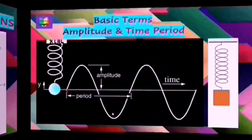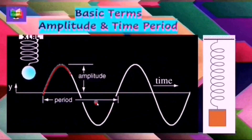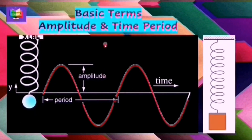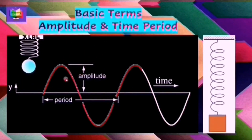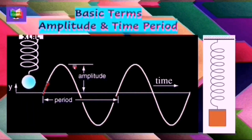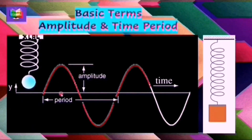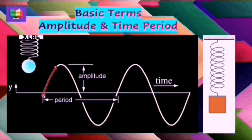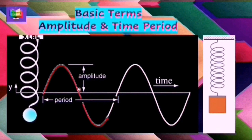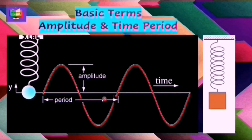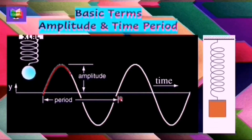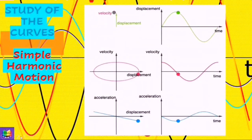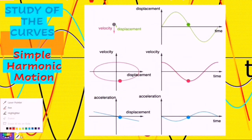Two important terms in simple harmonic motion are amplitude and time period. Amplitude is the maximum displacement from the mean position, and time period is the time taken to complete one vibration. These terms, along with many others, have already been studied in wave mechanics. Today's topic is the graphical representation of simple harmonic motion.